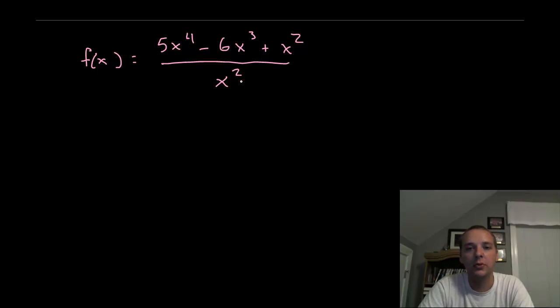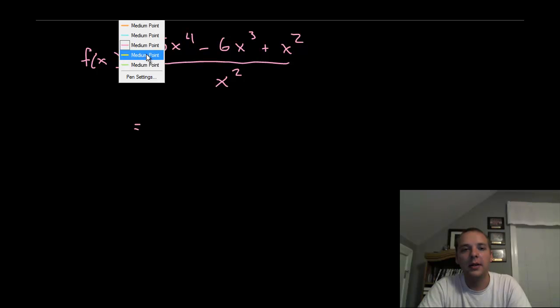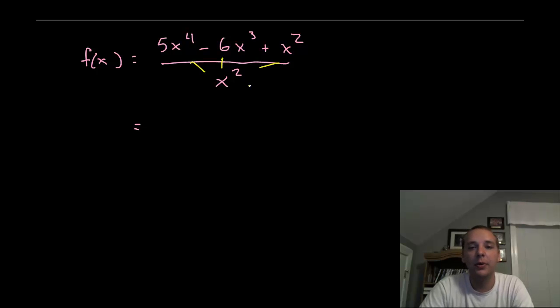Being that this is a monomial, a common technique we can use is to break this up into three separate terms. So this would lead to 5X squared minus 6X plus 1.